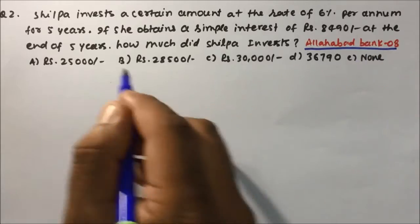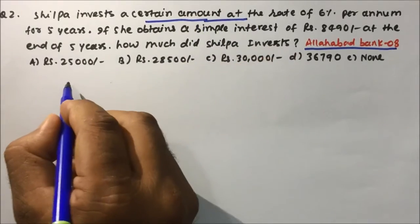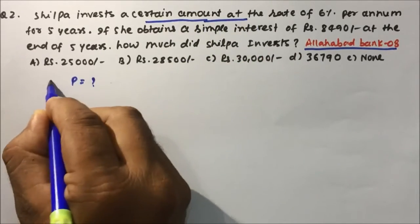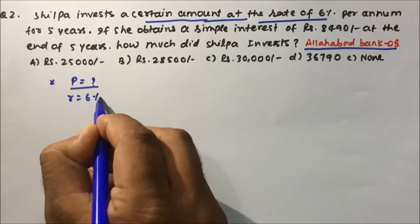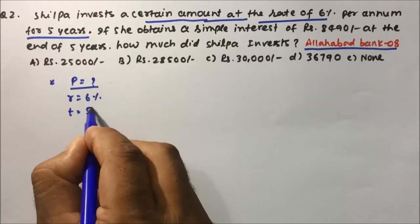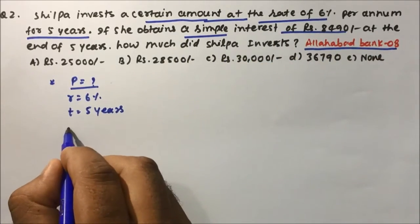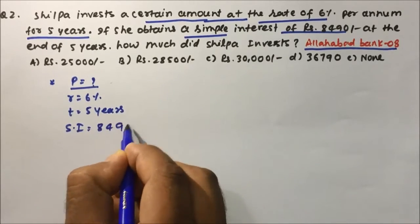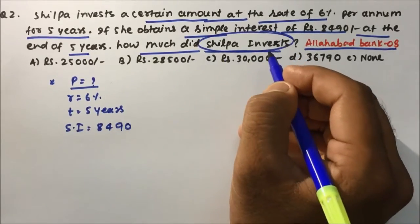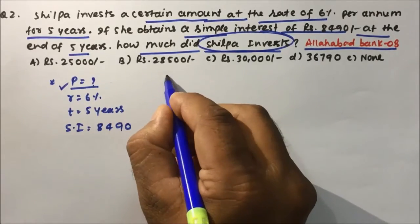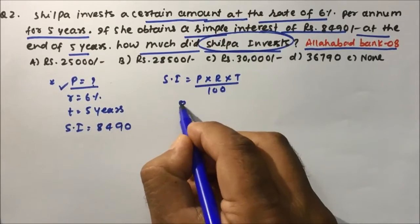Silpa invests a certain amount of money — that is the unknown principal — at the rate of 6% for 5 years. If she obtains a simple interest of 8,490 at the end of five years, how much did Silpa invest? Silpa's investment is the principal. Using Simple Interest = (P × R × T) / 100: 8,490 = (P × 6 × 5) / 100.